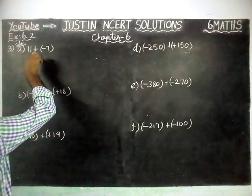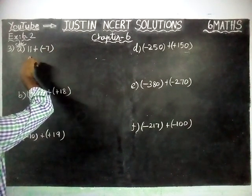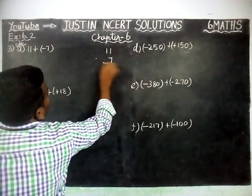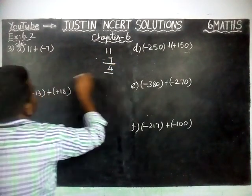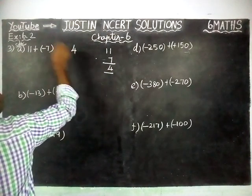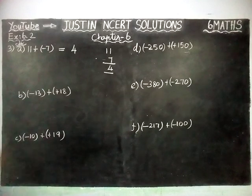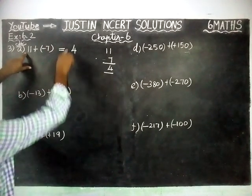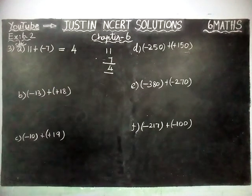We are going to find 11 plus minus 7. Signs are different, so we are going to subtract. 11 minus 7 is equal to 4. Now, which number is the greatest number? The greatest number is 11, and the sign in front of 11 is plus. So, plus 4 is the answer.